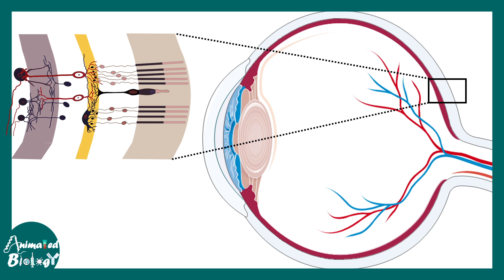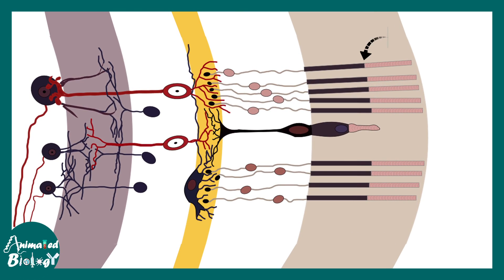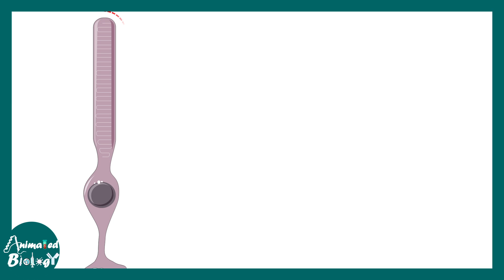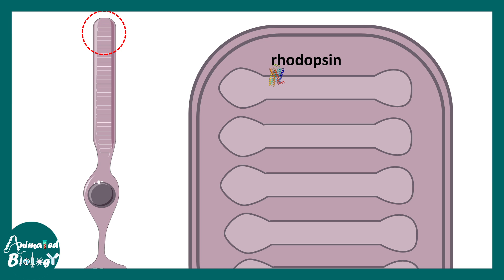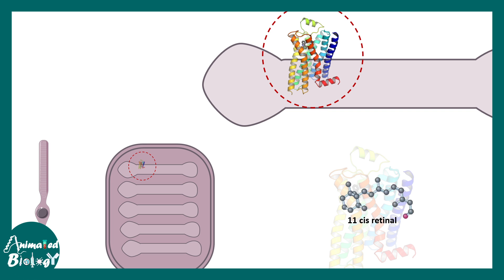Now for the second context: phototransduction in the retina. Looking at a zoomed view of the retina, we can see rod cells and cone cells. In rod cells, rhodopsin is the pigment molecule sensitive to light — it can change its conformation depending on whether light is present or not.